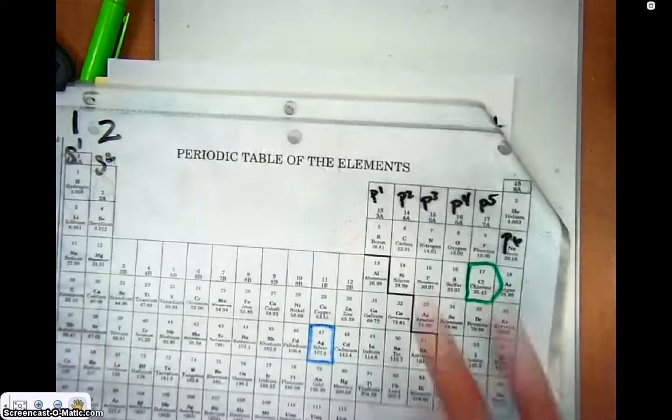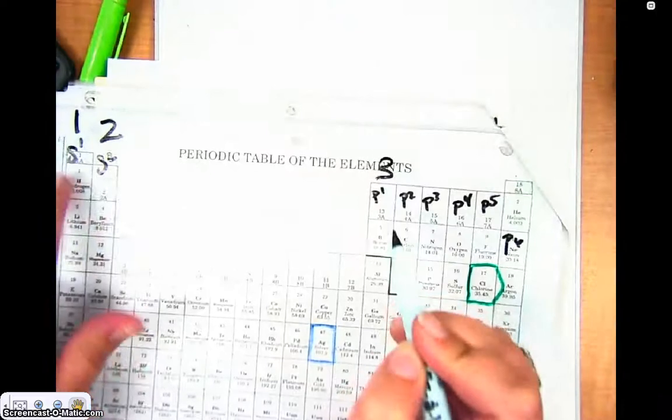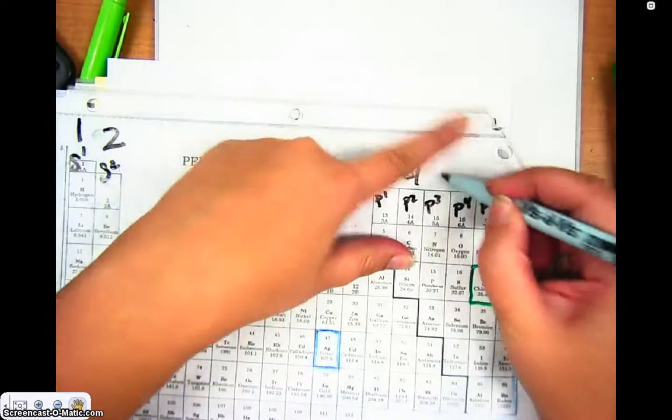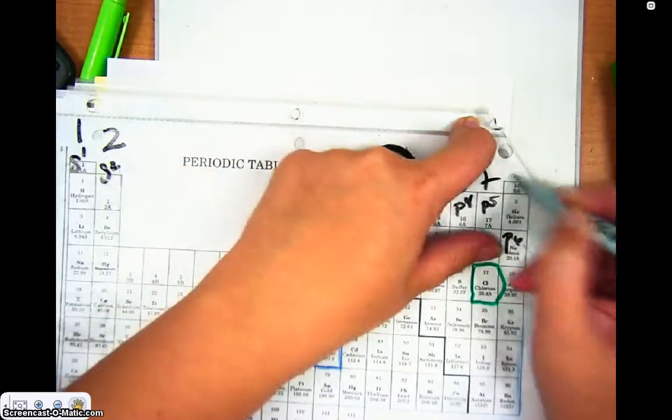If you're over here in column 3, it's 3 because you have S1, S2, and a P1. If you're in column 4, it's 4, and then it's 5, and then it's 6, and then it's 7, and then it's 8.